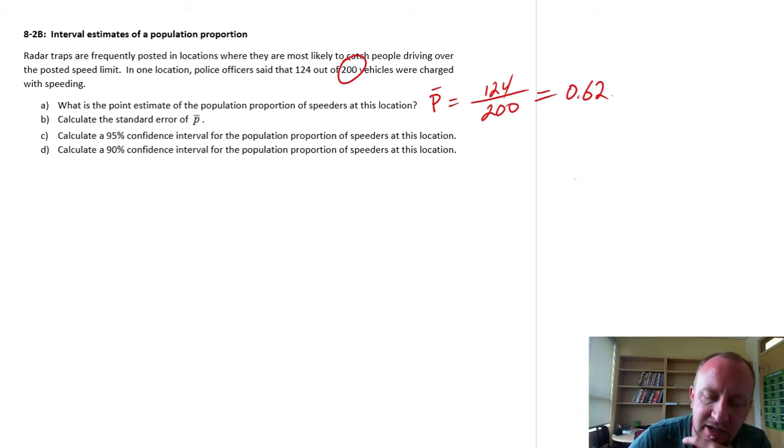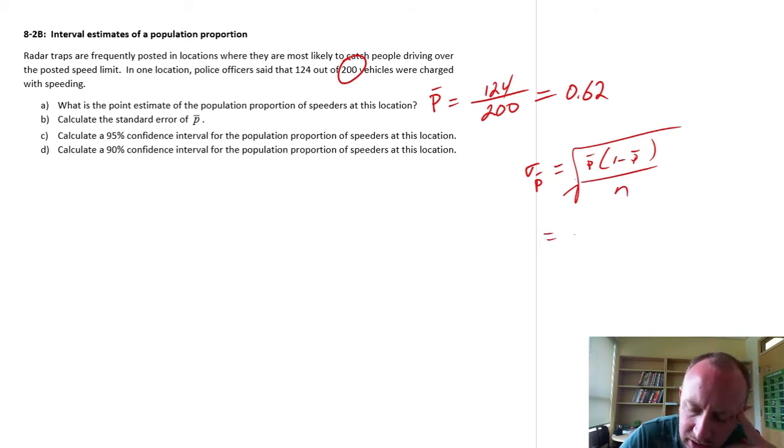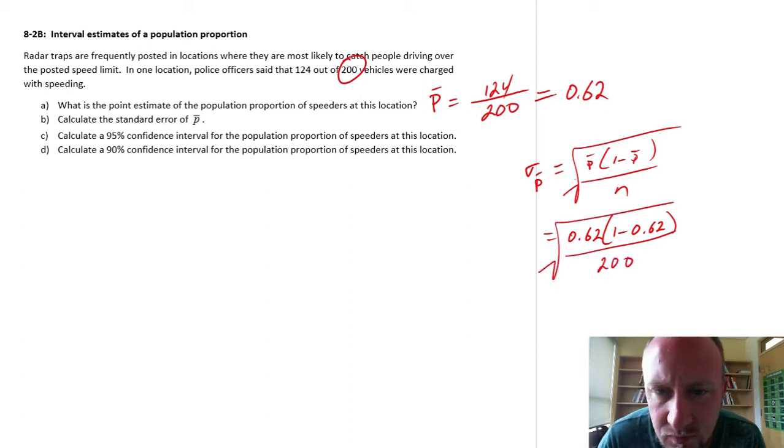Part B, calculate the standard error. So the standard error, we're just looking at formulas and we throw numbers into a formula. This is P bar times 1 minus P bar over N. So I have 0.62 times 1 minus 0.62 divided by our sample size, which is 200, and we take the square root of all of that. Let's get our calculator here.